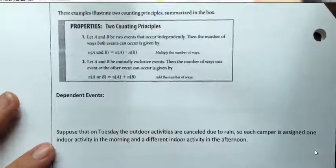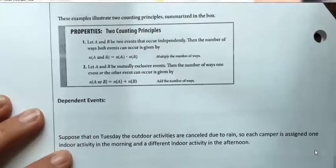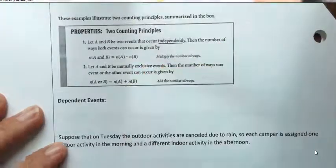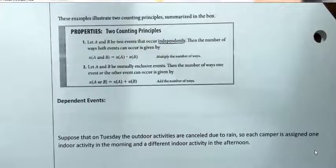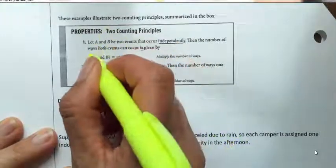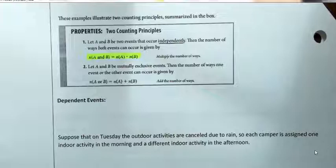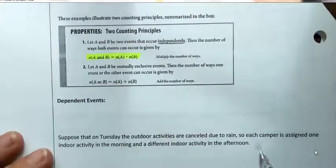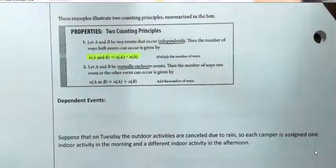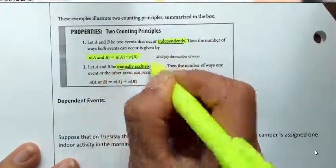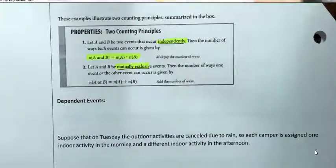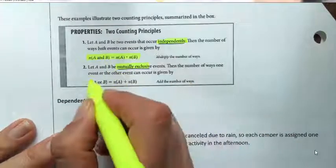Let's look at our two counting principles applied to independent events. We let A and B be two events that occur independently. Then the number of ways both events can occur is given by multiplication — you basically multiply the number of ways. Or, the second way: let A and B be mutually exclusive events. Then the number of ways one event or the other can occur is given by addition — you add all the different numbers of ways each mutually exclusive event can occur.